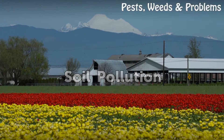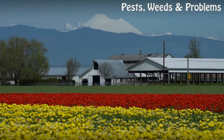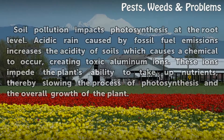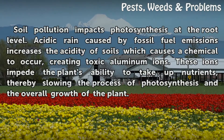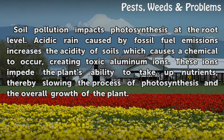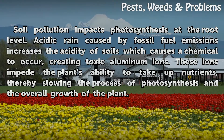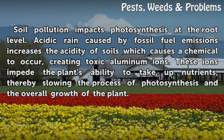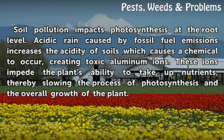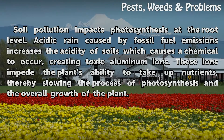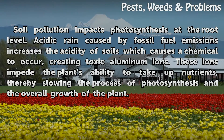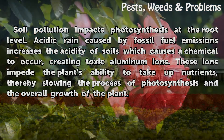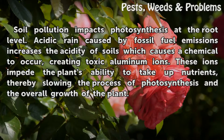Soil pollution impacts photosynthesis at the root level. Acidic rain caused by fossil fuel emissions increases the acidity of soils, which causes a chemical reaction creating toxic aluminum ions. These ions impede the plant's ability to take up nutrients, thereby slowing the process of photosynthesis and the overall growth of the plant.